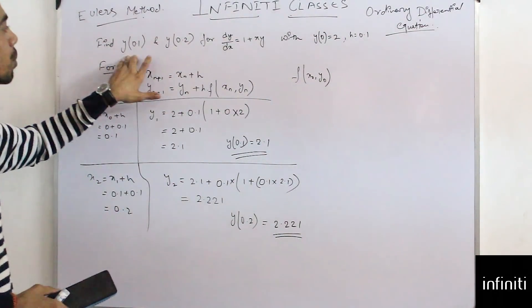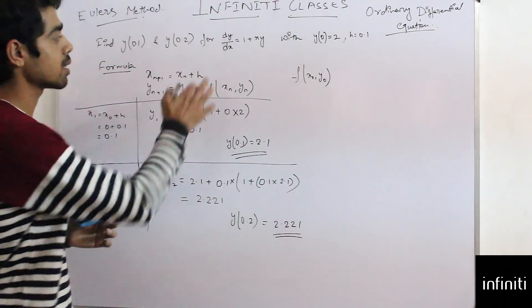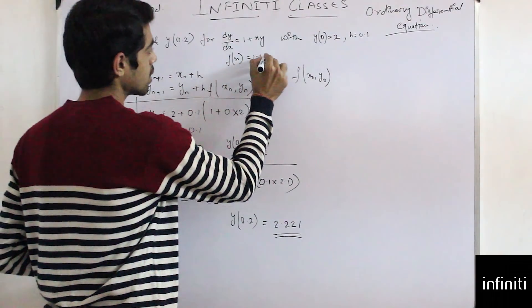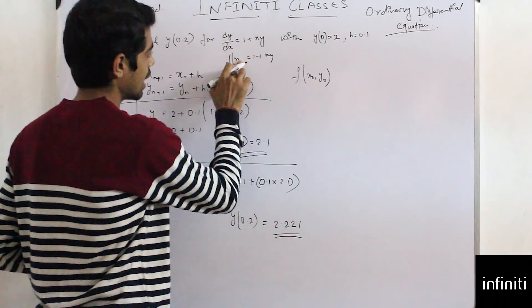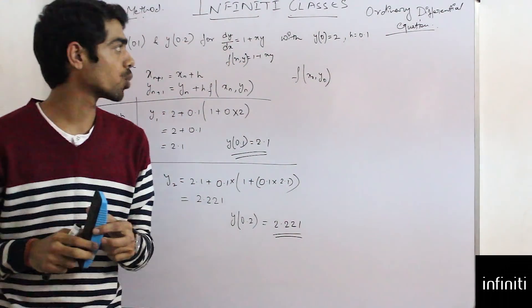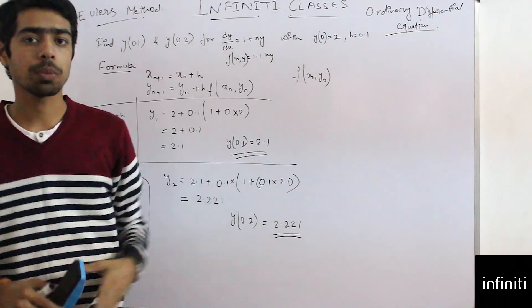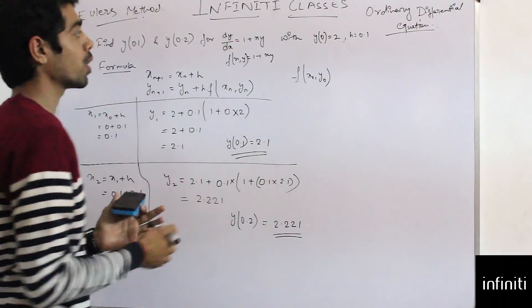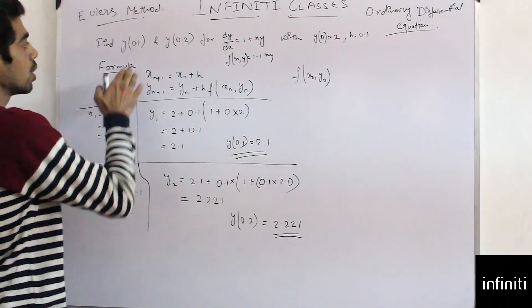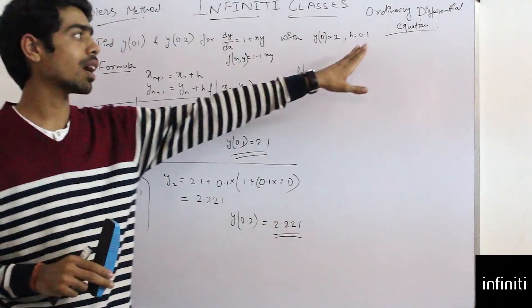We have to find y(0.1) and y(0.2) for this equation: f(x, y) = 1 + xy, with y(0) = 2 and h = 0.1. Here h = 0.1 is the step size — the difference from 0.1 to 0.2 — and that's why we have taken h = 0.1.